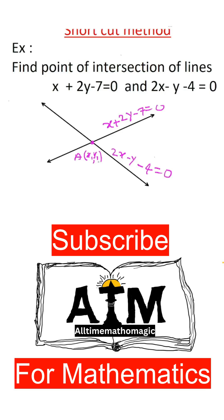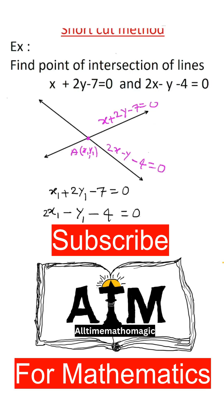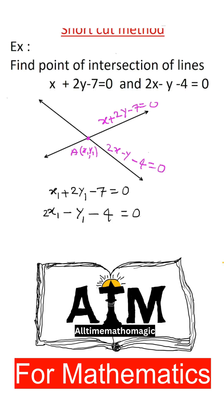Since point A(X1, Y1) lies on both the lines, it must satisfy the equation of both lines. We get X1 plus 2Y1 minus 7 equals 0, and 2X1 minus Y1 minus 4 equals 0. Call it equation 1, call it equation 2.